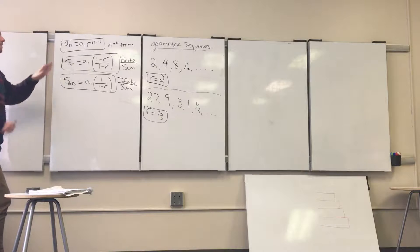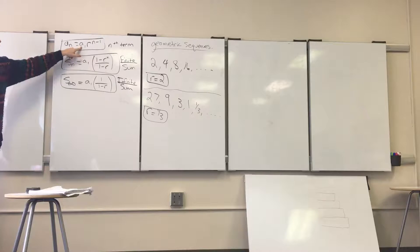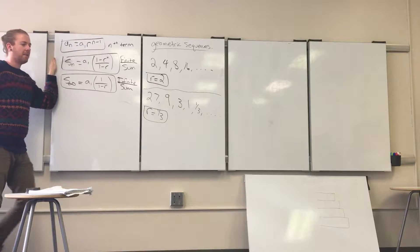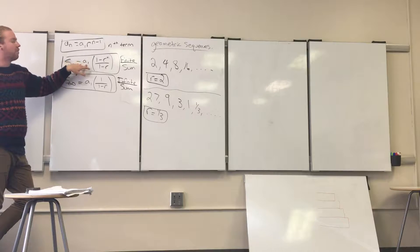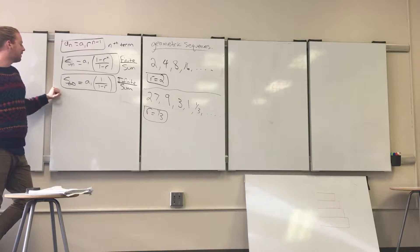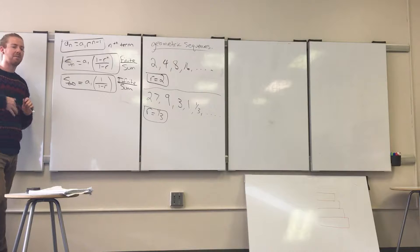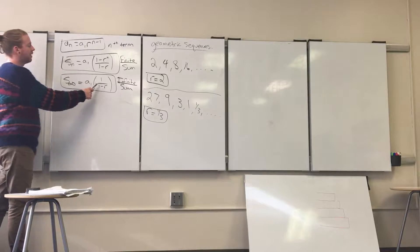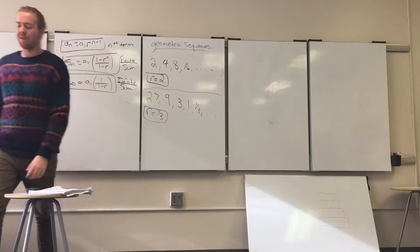Going back to the equations: the first is the nth term equation, A_sub_n equals A_sub_1 times r to the (n minus 1) power. The second is the finite sum equation S_sub_n: A_sub_1 times (1 minus r to the n) divided by (1 minus r), used when you need the sum of a specific number of terms. The third is the infinite sum equation S_sub_infinity: A_sub_1 times 1 divided by (1 minus r). We'll be using these three equations throughout the session.